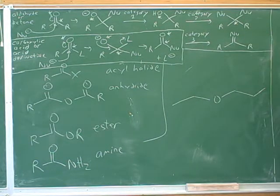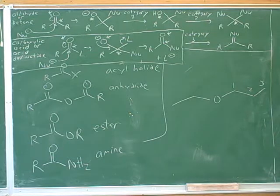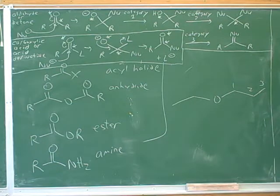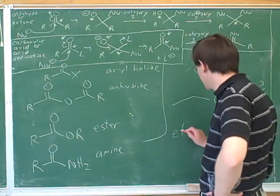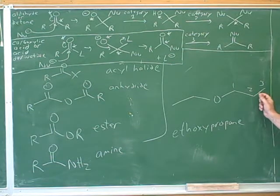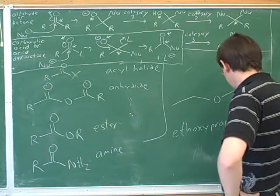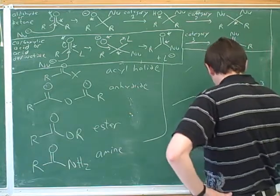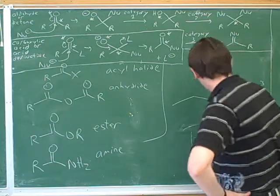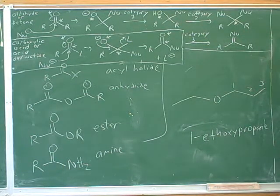The first thing we have to do is find the parent chain — that's the longer carbon chain, so that would be this one over here. THF is a cyclic ether, right? That's right — THF is not the IUPAC name, it's the common name. So would it be ethoxypropane? Why propane? Because the main chain has three carbons. We do have to say the number one — 1-ethoxypropane — because ethers don't have to be terminal.